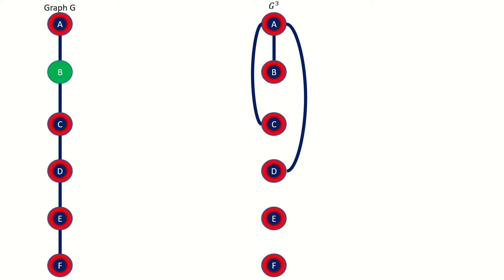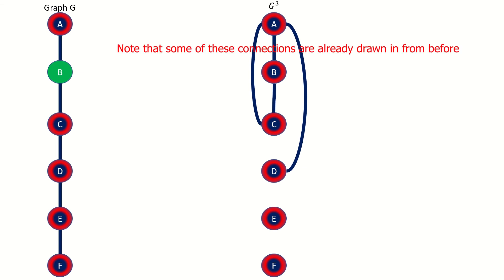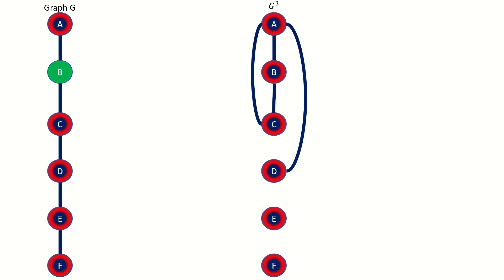Now take a look at vertex B. Vertex B in the original graph had a distance of 1 to vertices A and C, so it will connect to those vertices in the third power graph. Vertex B had a distance of 2 to vertex D, so they'll connect in the third power graph as well. Vertex B had a distance of 3 to vertex E, meaning that they will also connect. However, vertex B had a distance of 4 to vertex F, so it's too far away to connect in the power graph.